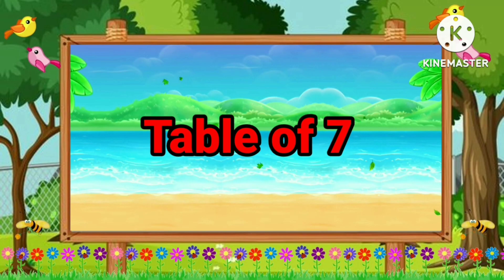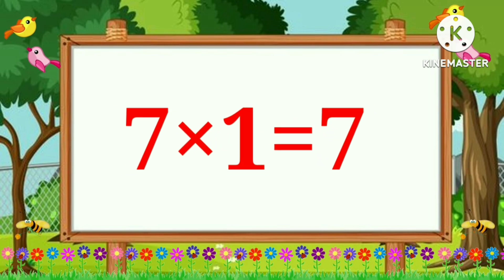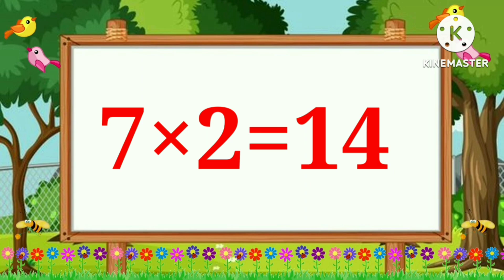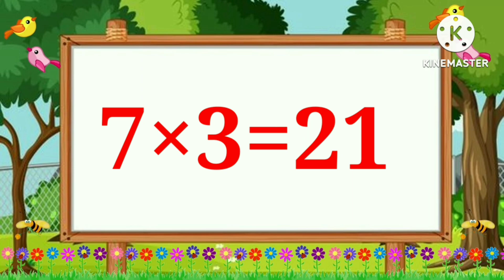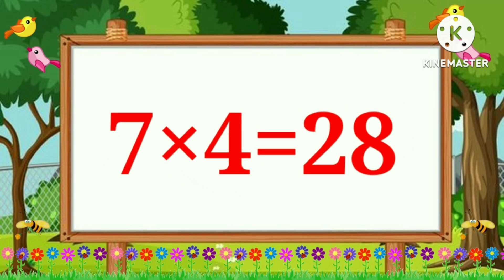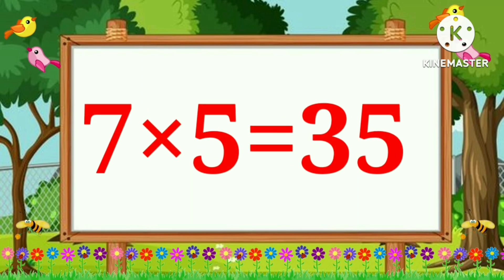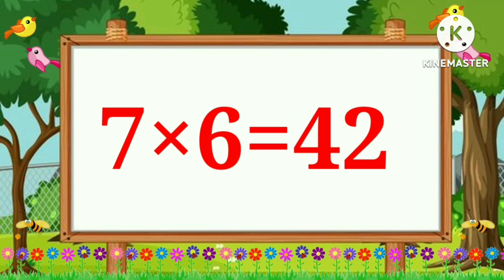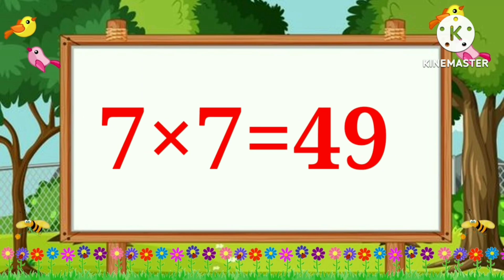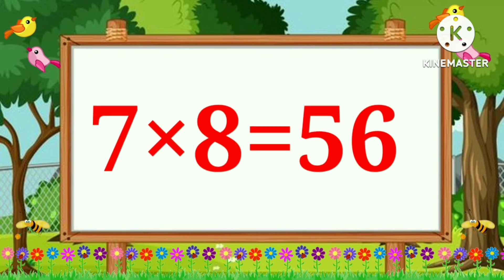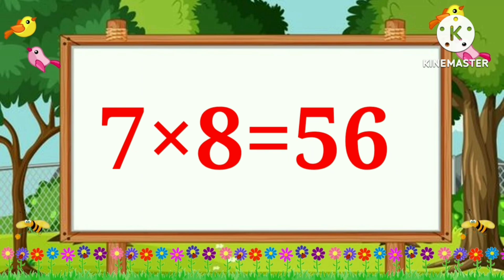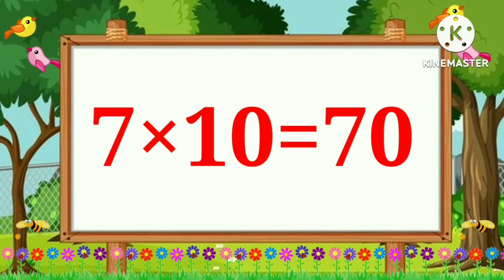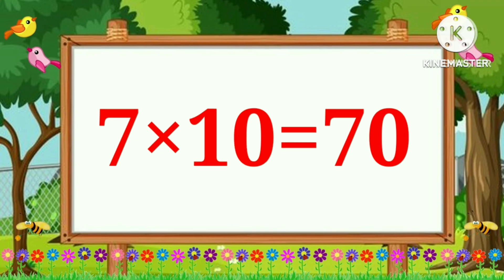Table of Seven. Seven ones are seven. Seven twos are fourteen. Seven threes are twenty-one. Seven fours are twenty-eight. Seven fives are thirty-five. Seven sixes are forty-two. Seven sevens are forty-nine. Seven eights are fifty-six. Seven nines are sixty-three. Seven tens are seventy.